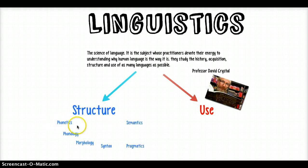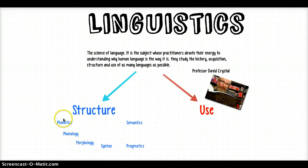Phonetics is the study of how we can differentiate between sounds — what's the minimum difference that can be used for meaning? Phonology is the set of sounds used by a particular language. The human voice can produce many different phonetic distinctions, but in any one language we only have a limited set of phonological ones.